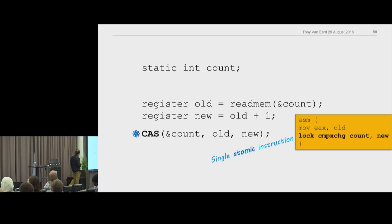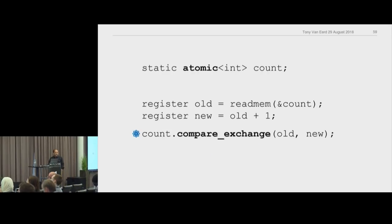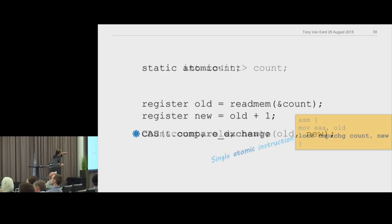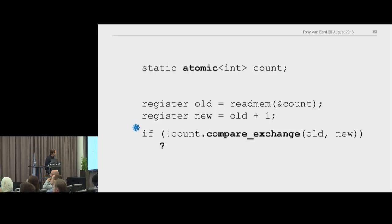In C++, this CAS function is called `compare_exchange`, and it's a member function of atomics. You call it like this: you have your count, and you compare exchange saying — if it's still the old value, make it the new value. You can check the result of compare_exchange; it'll tell you if it failed or not. If it was the old value, make it the new value and tell me whether you succeeded.